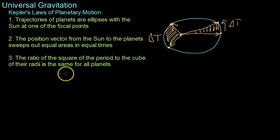Now with all that said, the last video, or the last law rather, says that the ratio of the square of the period to the cube of the radii is the same for all planets. Now what does that mean?